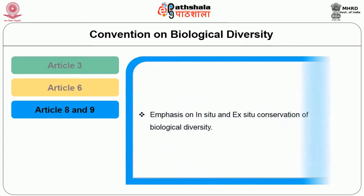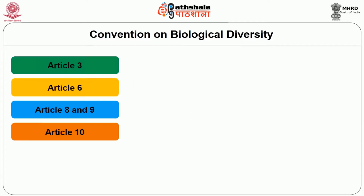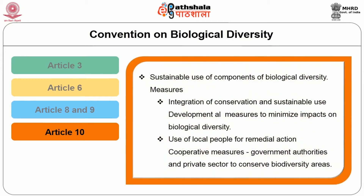Articles 8 and 9 of the convention give emphasis on in-situ and ex-situ conservation of biological diversity. They play a very major role in conservation, where national parks, laboratories, and everything come into plan. Article 10 details the sustainable use of components of biological diversity. The measures include integration of conservation and sustainable use, development of measures to minimize impacts on biological diversity, use of local people for remedial action in degraded areas, and cooperation between government authorities and the private sector to conserve biodiversity.